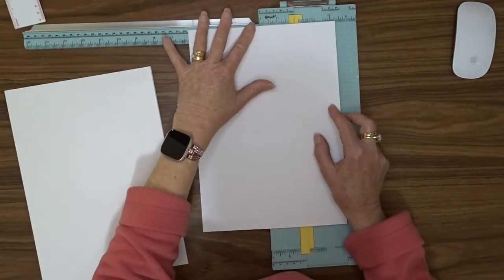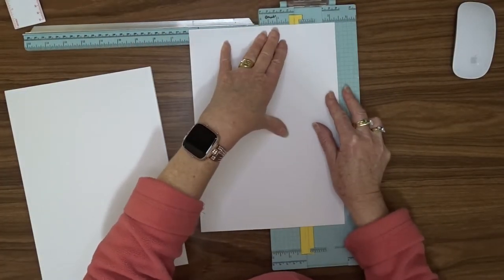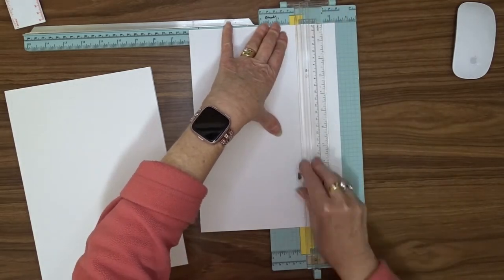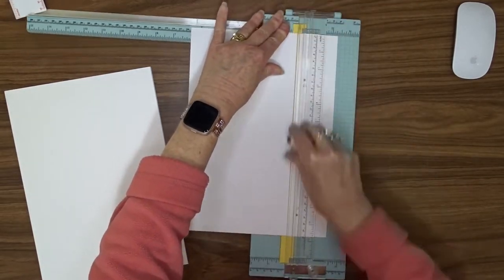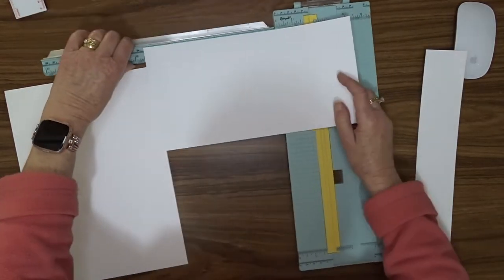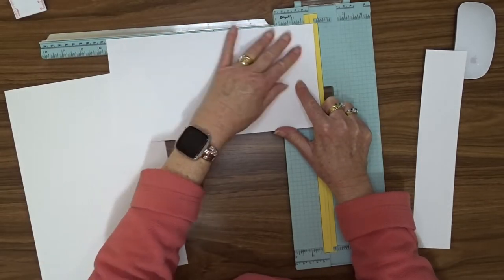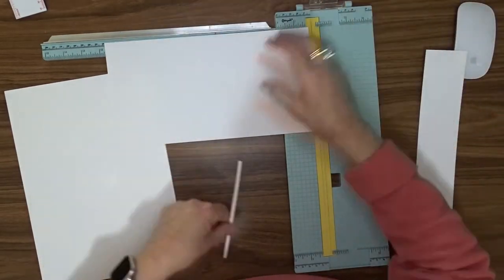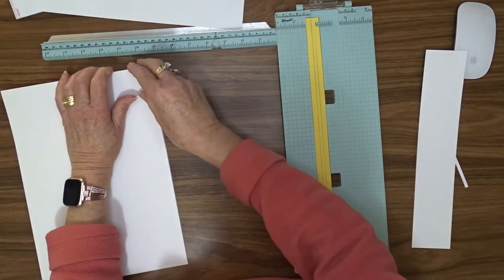So I'm starting with three A4 sheets of white cardstock. This is 240gsm. You could use a slightly heavier card if you wanted to. Now the first card I'm going to cut 6 inches by 11 and a half inches.